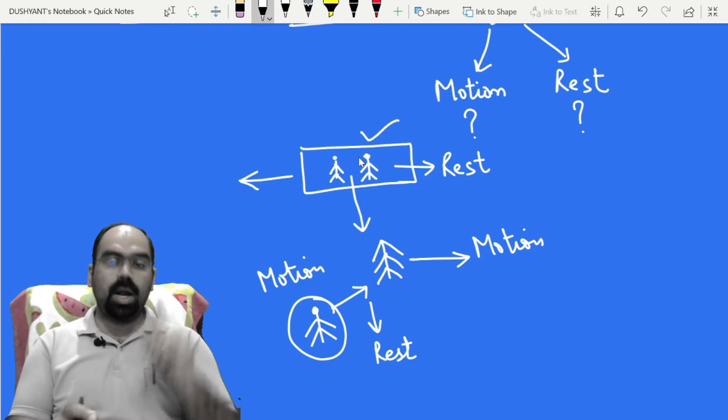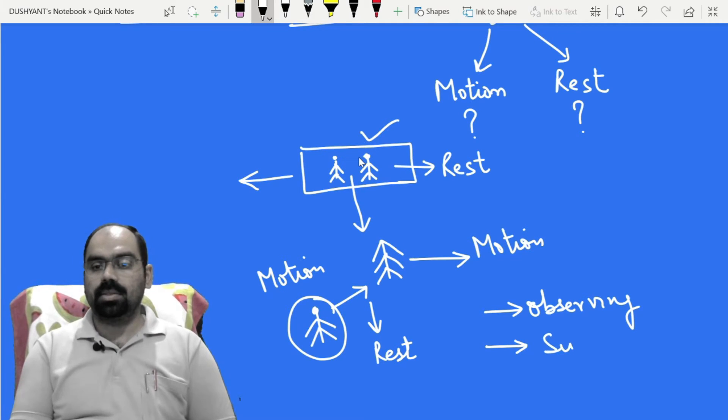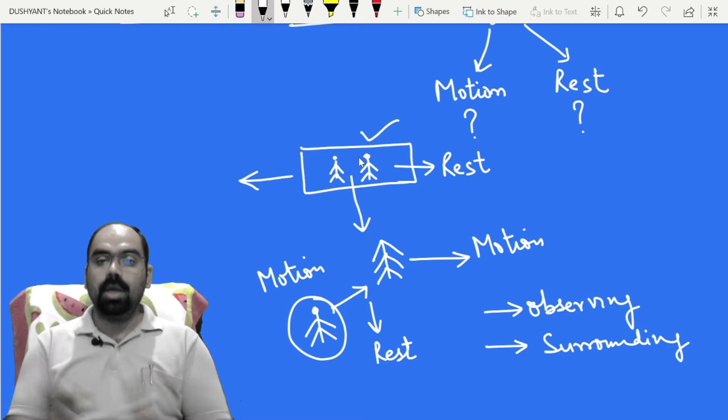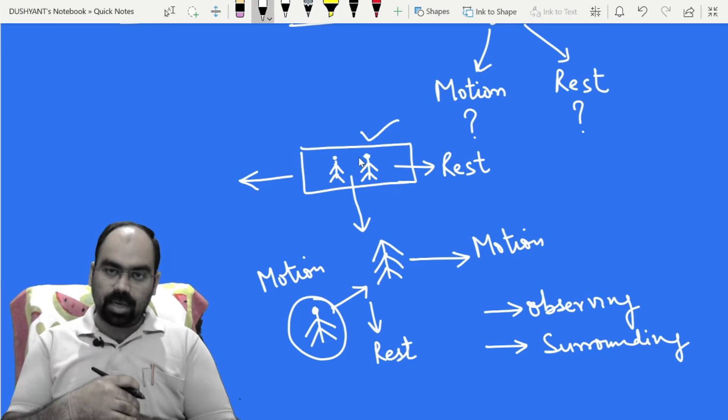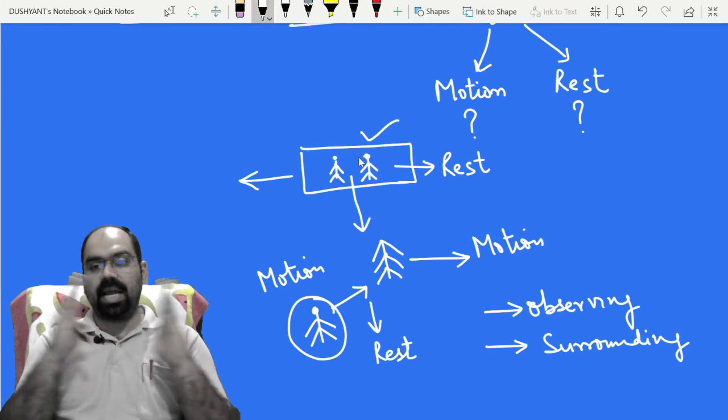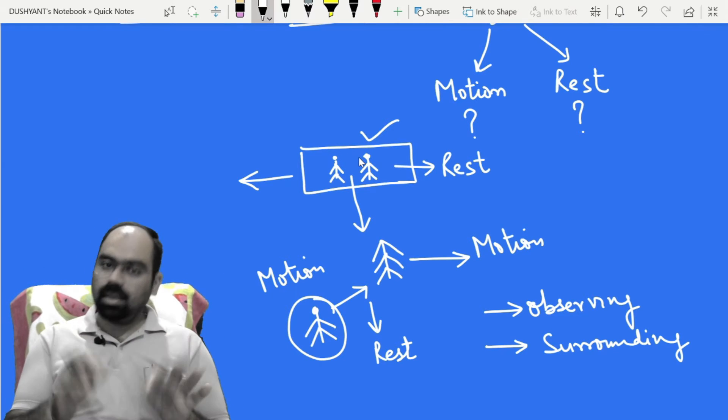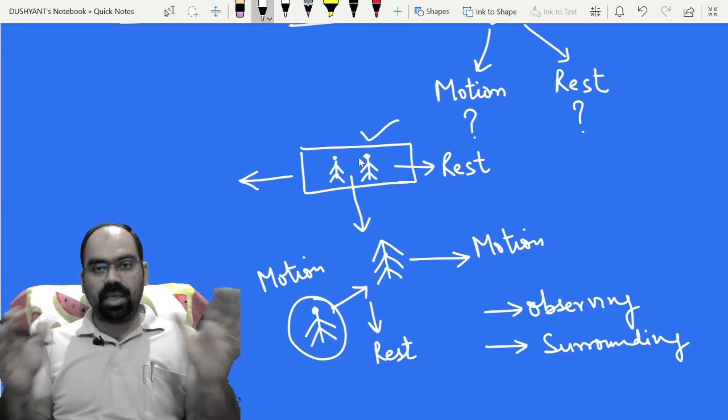So here you will see, what difference you found, what changed motion to rest, rest to motion, that is only due to the position of the observer. One thing, the observer who is observing the things. And second one, the surroundings. If you change your surroundings, then the way you see motion or rest, that method will change. That means, with change in your surrounding, your everything is getting changed.